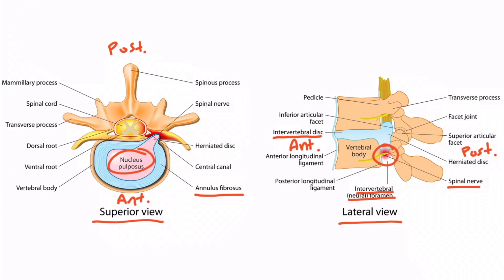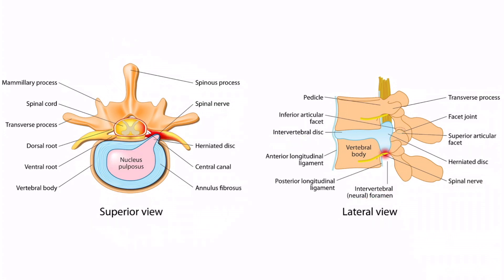The intervertebral discs most commonly herniate posterolaterally. The image on the right allows us to see the anterior longitudinal ligament and the posterior longitudinal ligament — two ligaments that surround and stabilize the intervertebral disc, preventing it from herniating out of its normal anatomical location. However, the posterior longitudinal ligament is thinner and weaker than the anterior longitudinal ligament, which means that under stress, the disc is more likely to protrude posteriorly.